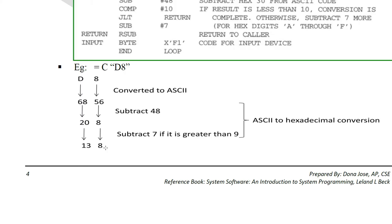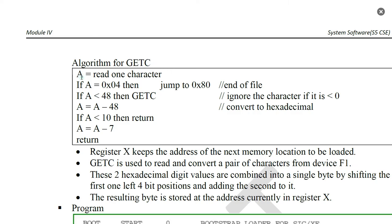The getc algorithm: A equals read one character. If A equals 0x04, then end of file. If A is less than 48, ignore that character and read again. Otherwise, subtract 48 from the character's ASCII value. If the result is greater than 9, subtract 7 more. This converts the hexadecimal character into its numeric value. This is the getc function used in the bootstrap loader algorithm.